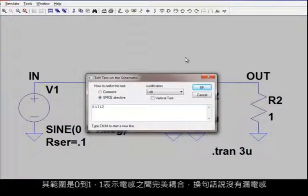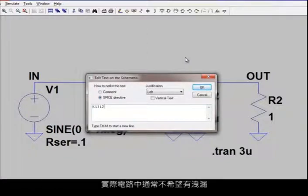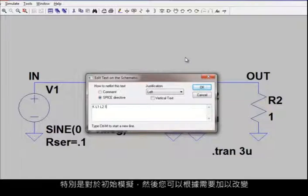The last entry in the K statement is the mutual coupling coefficient. This is on a scale from 0 to 1 where 1 means perfect coupling between the inductors, in other words, no leakage inductance. Since leakage is usually not desired in a practical circuit, it's easier and truly sufficient to ignore leakage inductance by setting the value to 1, especially for your initial simulations.